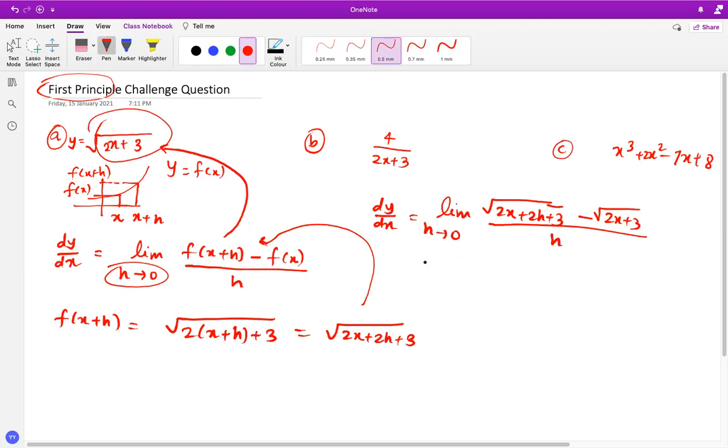So what we have to do is we have to adopt a strategy here for such kind of question, which is called rationalization. So when you rationalize it, what we get is, basically, I'm just going to modify this step. So it'll be limit h tending to zero. I'm going to rewrite this expression square root of 2x plus 2h plus 3 minus square root of 2x plus 3 over h.